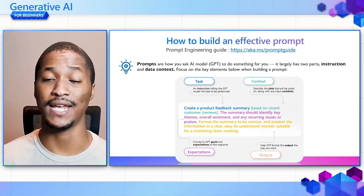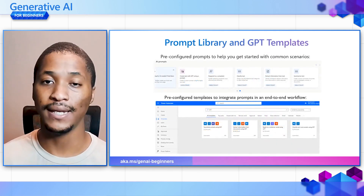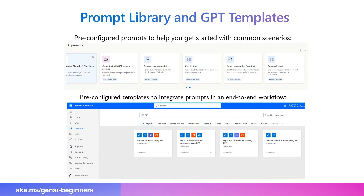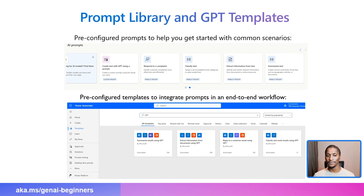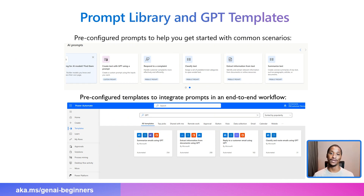How do you take advantage of this within the Power Platform? You have the prompt library and GPT templates — pre-configured prompts to help you get started with common scenarios like responding to a customer complaint, classifying text, extracting information from text, or summarizing text from an email or a Power App. You can use pre-configured templates to get started and integrate those prompts into an end-to-end workflow or solution built with Power Apps.